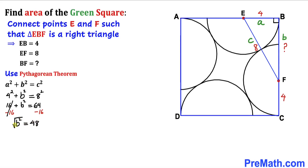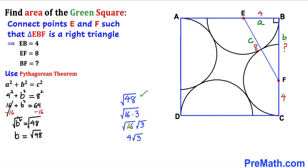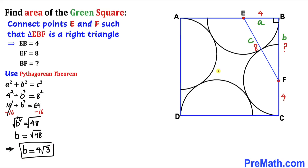Let's go ahead and take the square root on both sides. The square and square root undo each other, so b turns out to be √48. Now let's simplify √48: we can break it down as √16 × √3, and since √16 = 4, we get √48 = 4√3. So our b value, and therefore the unknown side BF, turns out to be 4√3.